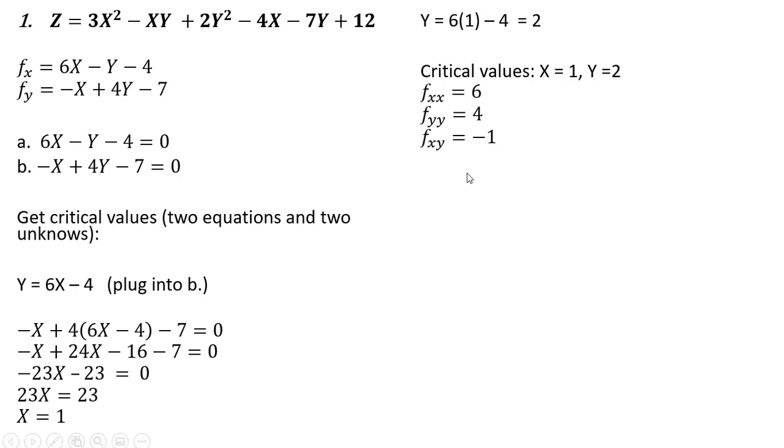In terms of cross partial derivatives, this first function here, we take the partial derivative of that with respect to y, we get back minus one. And because of Young's theorem, this cross partial derivative should also equal minus one. So we can verify that. Taking the partial derivative of this function down here with respect to x, we get back minus one.